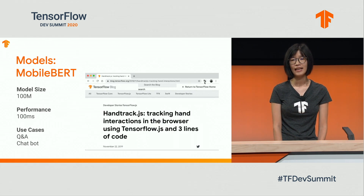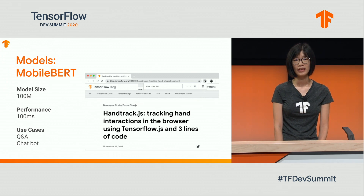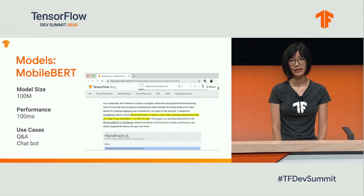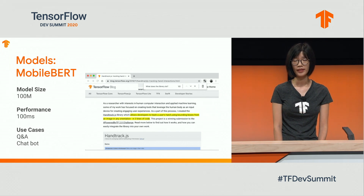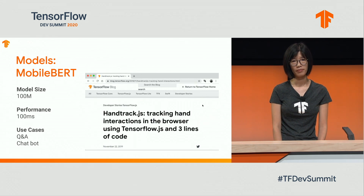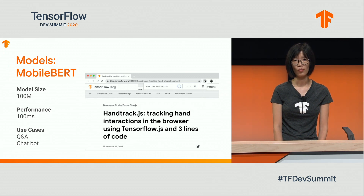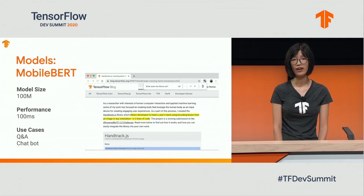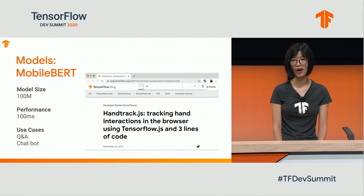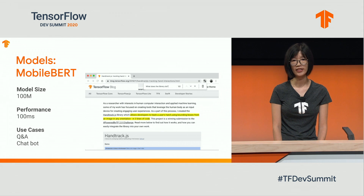Next, let's look at a language model: MobileBERT. The model is 100 megabytes — pretty large for the web — with an inference speed of 100 milliseconds. We made a Chrome extension for Smart Q&A where users can ask any question on a web page and the most relevant answers will be highlighted. We demonstrate it's possible to run a large model in browsers. This model can also be used in conversational interfaces such as chatbots.